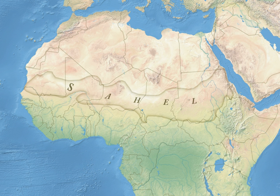The name is derived from the Arabic word 'Sahil', meaning 'coast' or 'shore' in a figurative sense, in reference to the southern edge of the vast Sahara, while the name Swahili means 'coastal dweller' in a literal sense.